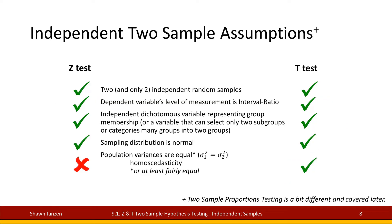The assumptions we're dealing with here are that we want two and only two independent random samples. If we have more than two samples we'll have to turn to ANOVAs and other tests. We want our independent level of measure to be interval-ratio — these are our numerical groups. We also want to make sure the independent dichotomous variable for group membership allows only two subgroups — for example, if it's M&M colors, we're only going to pick two colors, not the full array.